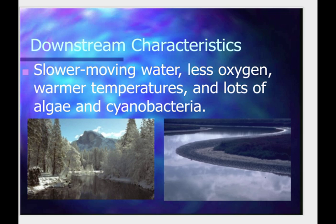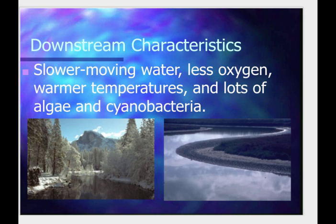Then you have downstream characteristics — this is where you have a lot of human activities. Unfortunately, humans degrade and destroy these areas. As these rivers and streams go downhill, they shape the land where they pass — they collect rock and soil and deposit it as sediment in low-lying areas. We'll talk about sediment downstream when we discuss dams. Here you can see slower-moving water, less oxygen, warmer temperatures, and lots of algae and cyanobacteria.